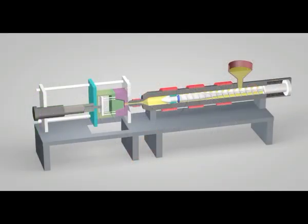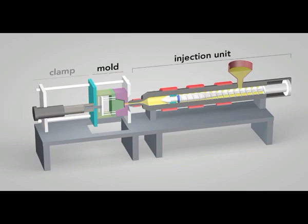In reality, injection molding is an intricate and complex process. An injection molding machine has three main parts: the injection unit, the mold, and the clamp.